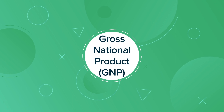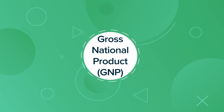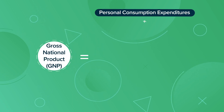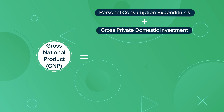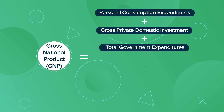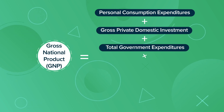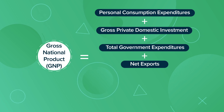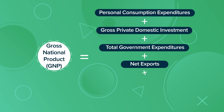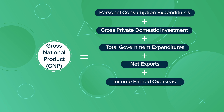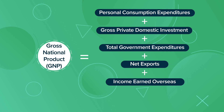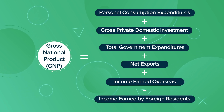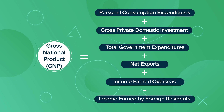GNP is commonly calculated by adding up the following: total personal consumption expenditures, gross private domestic investment, total government expenditures, net exports — or the total value of exports minus the total value of imports — total income earned by citizens from overseas investments, and then subtract domestic income earned by foreign residents.